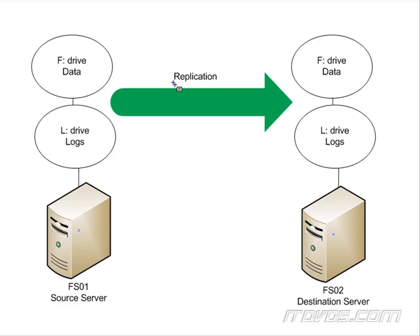The other option is asynchronous replication, and we're going to use this normally in a disaster recovery scenario with a slower network connection between source and destination. What happens is: if a file or a block is changed on our source, it automatically responds right away — that change is sent over to FS02 and then written to FS02. The source server doesn't wait for the acknowledgement from FS02 that it's been written. Because of this, there's a possibility that FS02 could actually be behind, and if FS01 goes down, FS02 technically could be behind, or there could be some data loss.